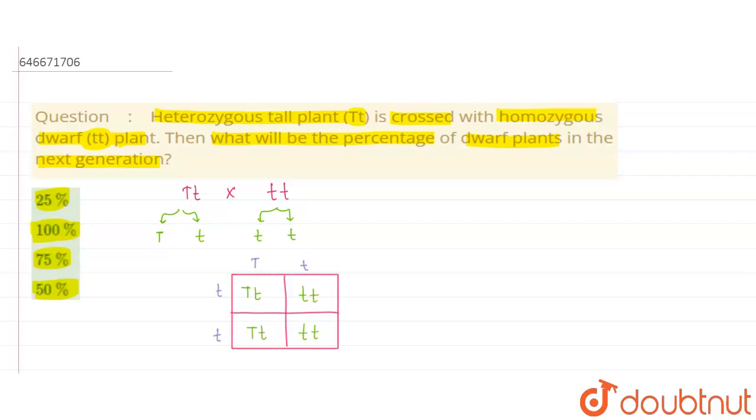So we can say that in the heterozygous condition, only the dominant character can be seen. Only the dominant character is expressed. And hence we can say that in this heterozygous condition only tall will be expressed, and that is capital T small t. So these two are tall, these two are tall.